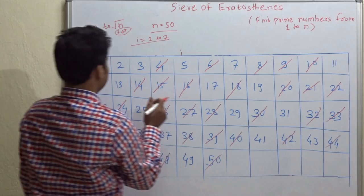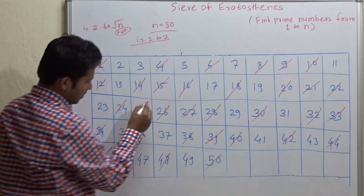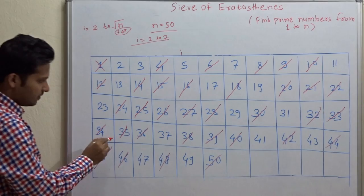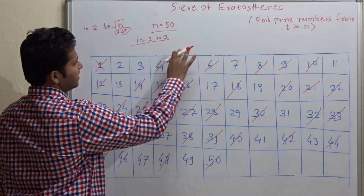Let us cancel the multiples. 5, 10 is already cancelled, 15, 20, 25, 30, 35, 40, 45, and 50.